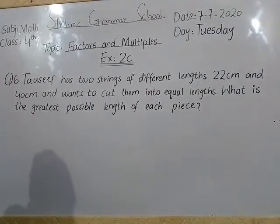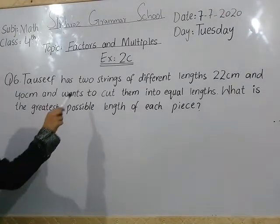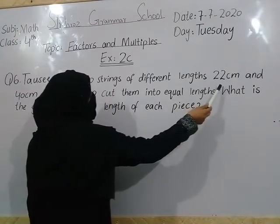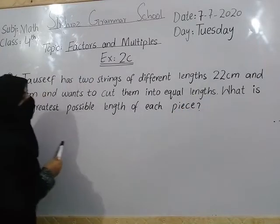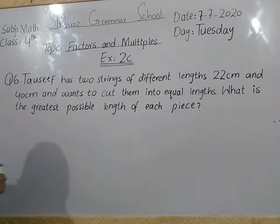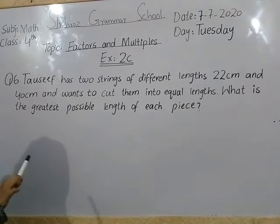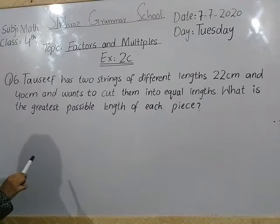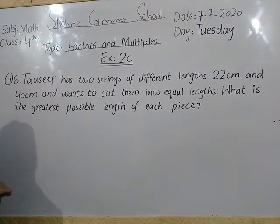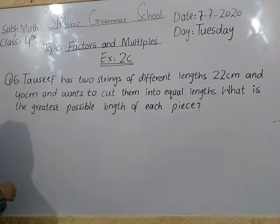Okay students, question number 6. We have 2 strings of different lengths — one is 22 cm and the other is 40 cm. If we cut them into the same equal length, we want to find that same equal length we need to cut the strings.